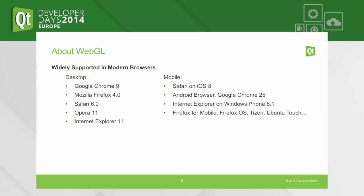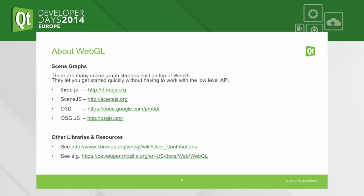When you have an API like this available on multiple browsers — basically everywhere — you get innovation. There are many, many libraries built on top of WebGL. For example, scene graph libraries. I'm mentioning four here because those keep popping up when you Google for scene graph on WebGL: Three.js, scene.js, O3D — something done by Google, which seems pretty popular — and Open Scene Graph.